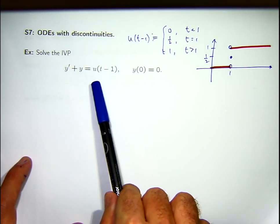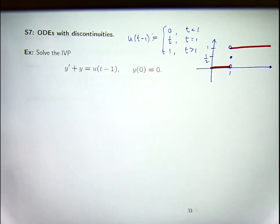You can see that the right-hand side has a discontinuity at t equals 1. So if you were to solve this problem by traditional techniques, what you would do is solve the problem for t less than 1, t greater than 1, and sort of connect the solutions together. So how do we do this with Laplace transforms?